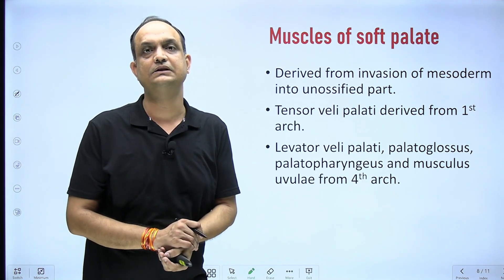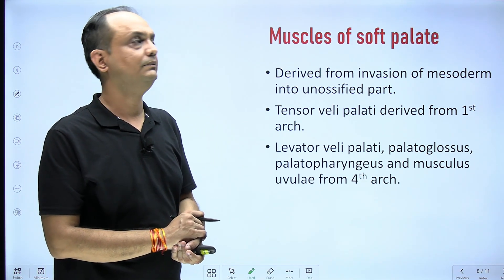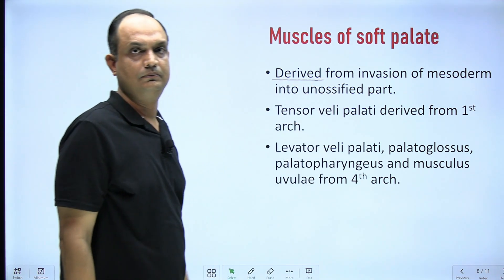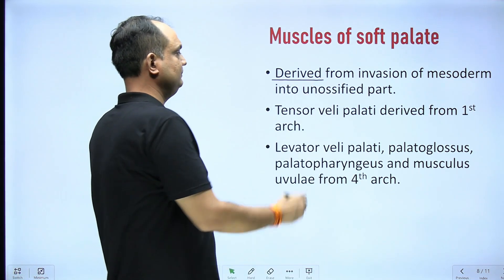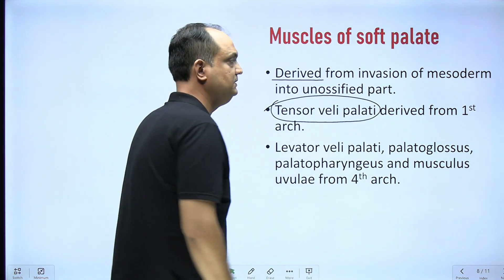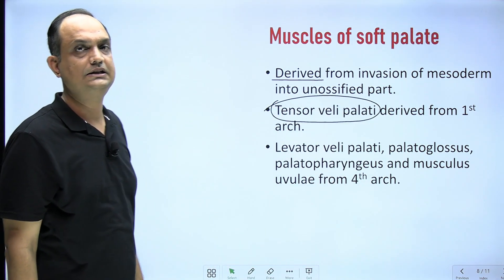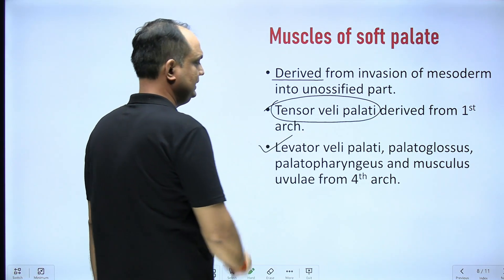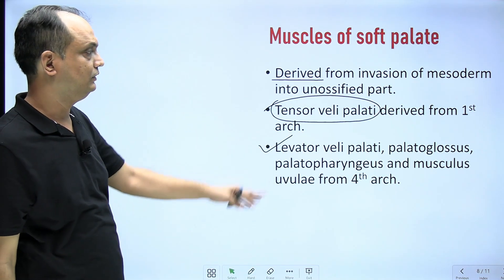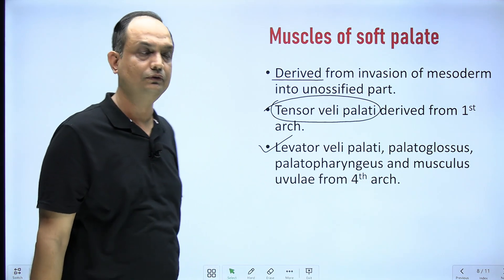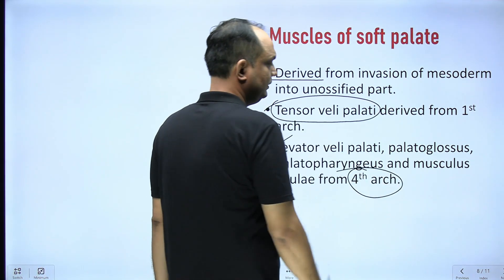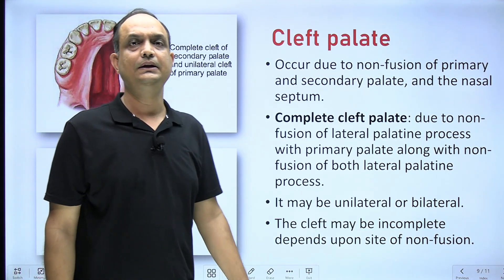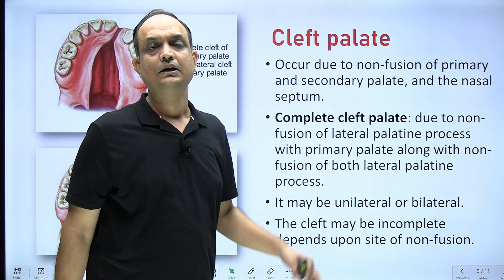The muscles of the soft palate are derived from the invasion of mesoderm. The tensor veli palatini comes from the mesoderm of the first pharyngeal arch and is supplied by the mandibular nerve. The other muscles of the soft palate — levator veli palatini, palatoglossus, palatopharyngeus, and musculus uvulae — all come from the mesoderm of the fourth pharyngeal arch.